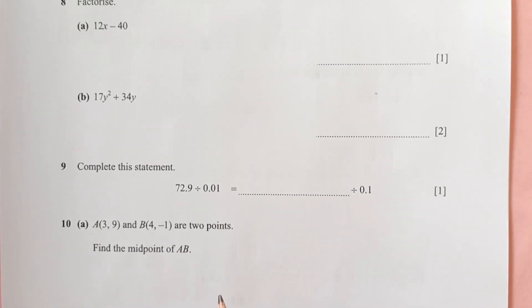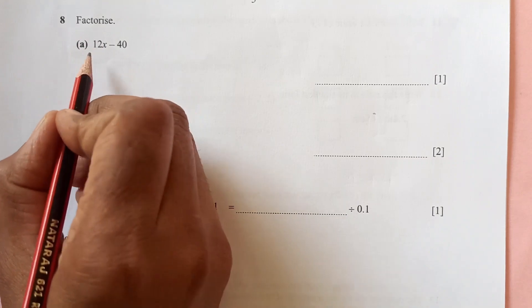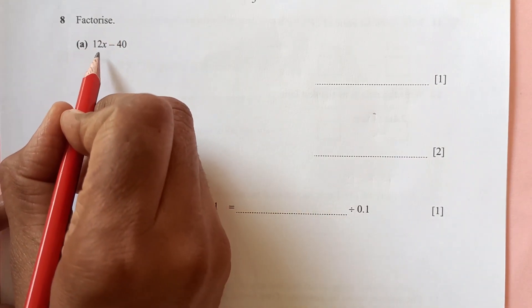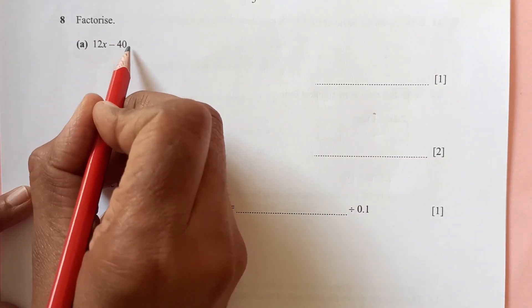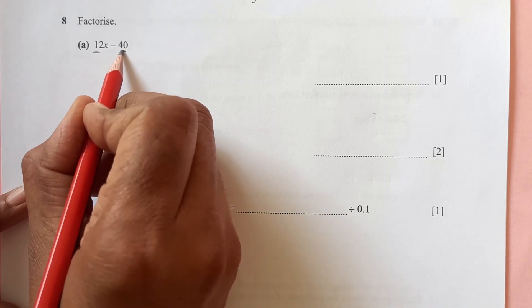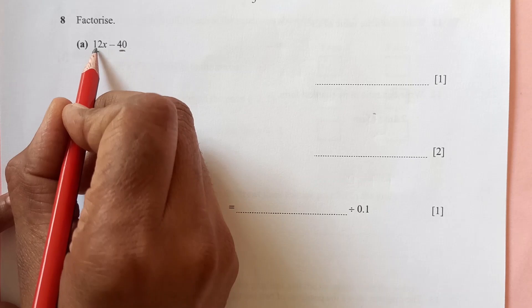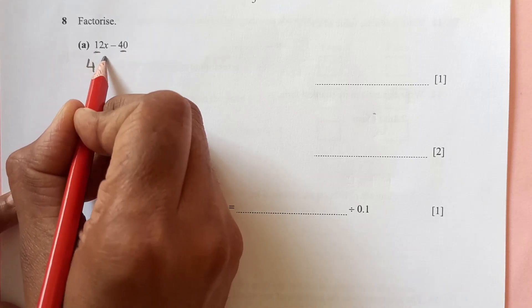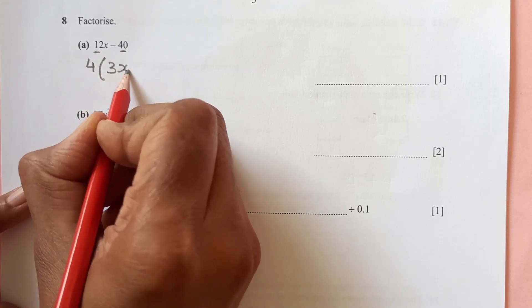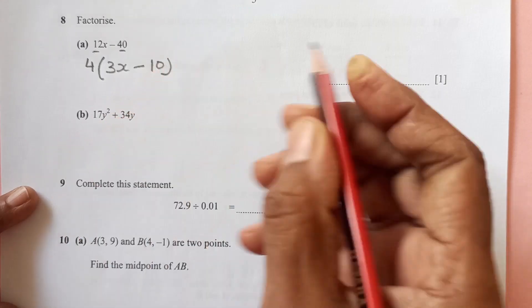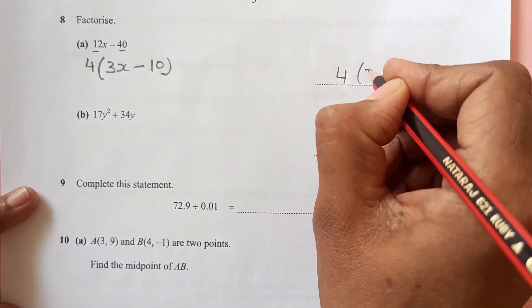Question number eight: factorize. For factorization, we need to see what is common in both. You see, x is not there, so we will have only numbers. Both numbers are multiples of 2 and also 4, so we will take 4 out. 4 times 3 here, it will be 10. No further simplification possible, so this is the final answer.